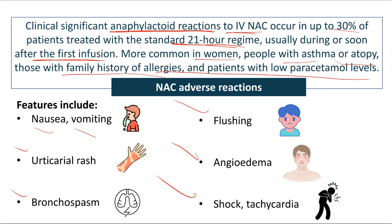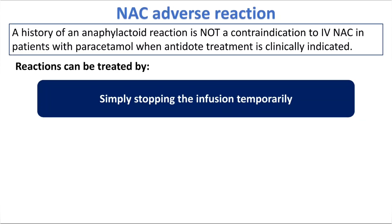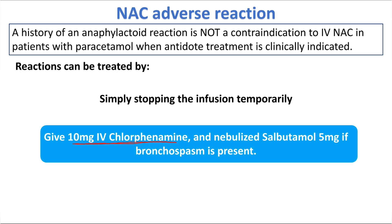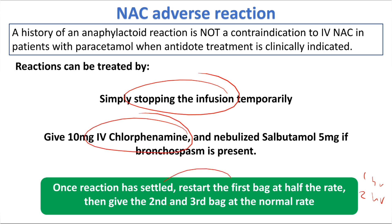Anaphylactoid reactions occur especially in women, those with asthma, atopy, family history of allergy, or patients with low paracetamol levels. This is not a contraindication to IV N-acetylcysteine — simply stop the infusion temporarily, give 10 mg IV chlorphenamine, and nebulized salbutamol 5 mg if bronchospasm is present. Once the reaction settles, restart the first bag at half the rate (e.g., give over two hours instead of one hour), then give the second and third bags at the normal rate.